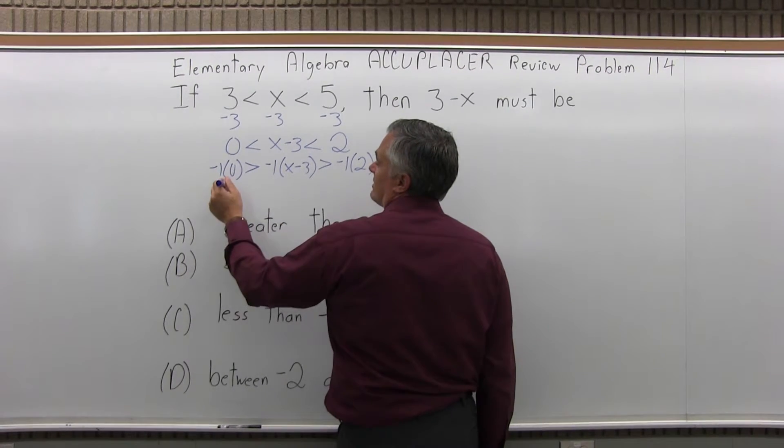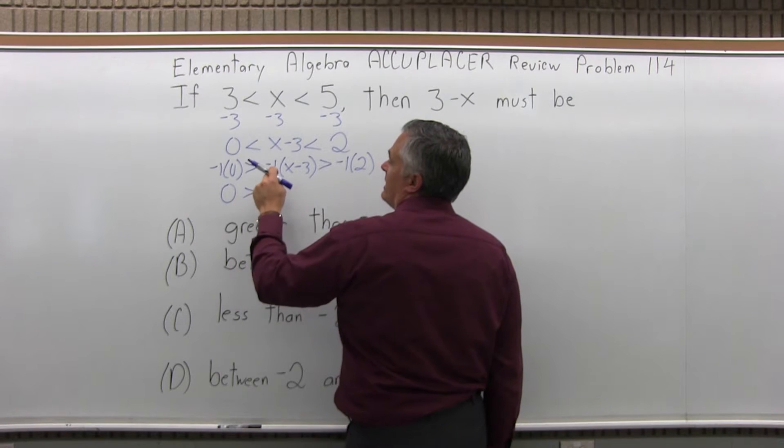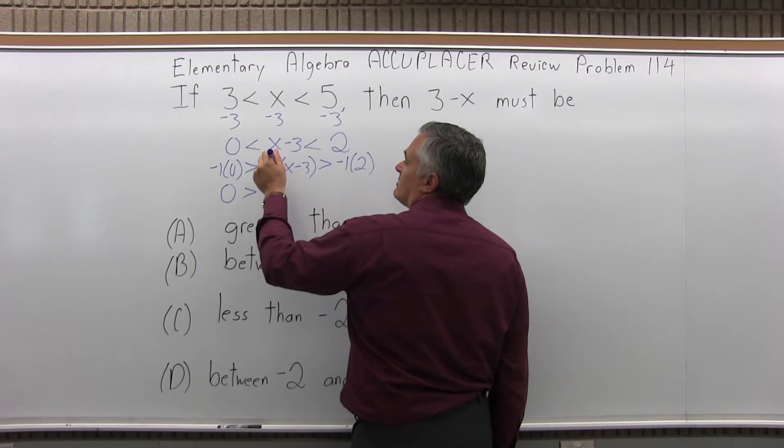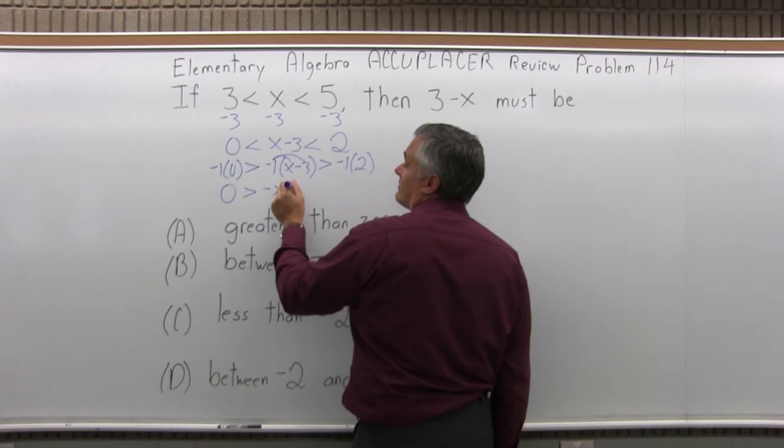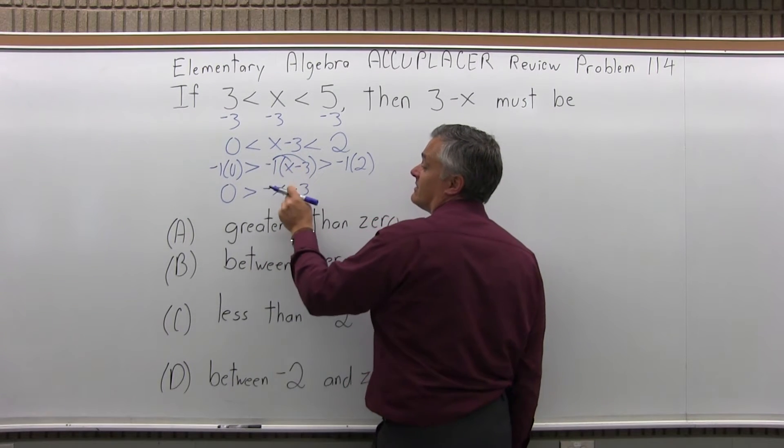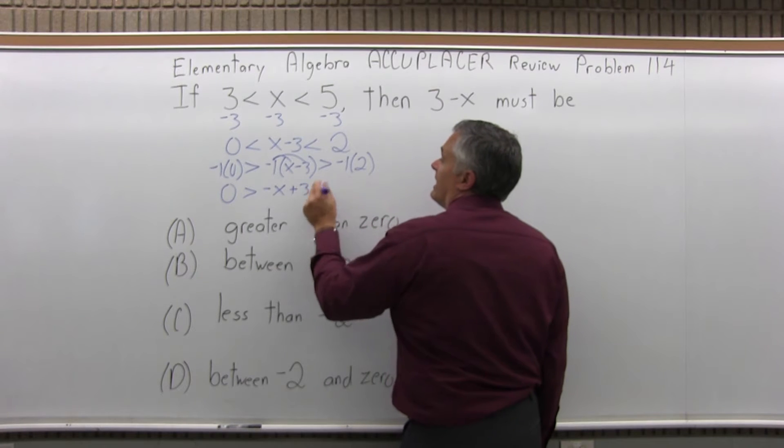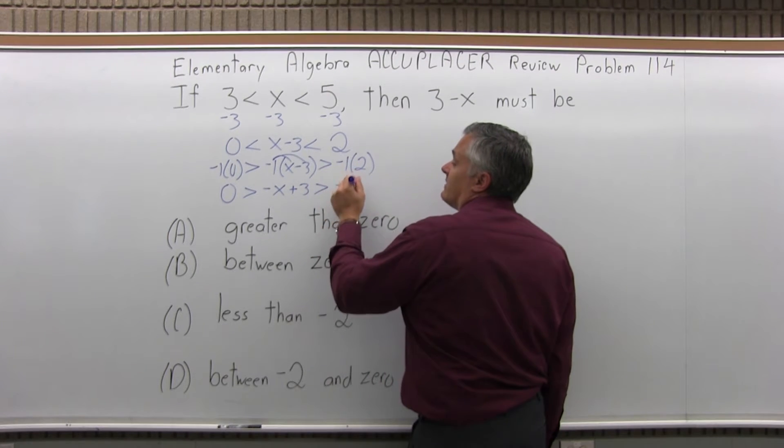So negative 1 times 0, that's easy, that's 0. Negative 1 times x minus 3, well, negative 1 times x is negative x. Negative 1 times negative 3 is positive 3, right? Negative times the negative, the negatives cancel. And negative 1 times 2 is negative 2.